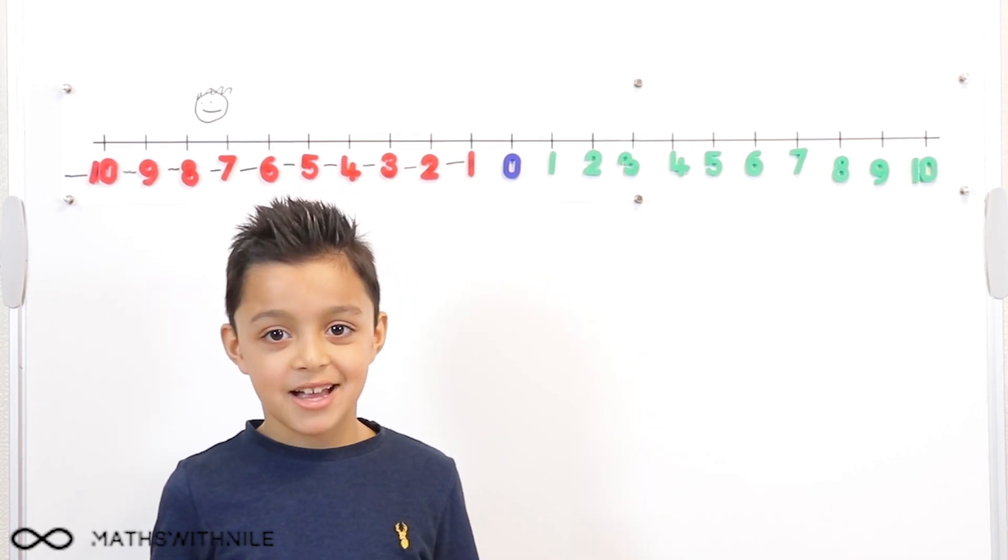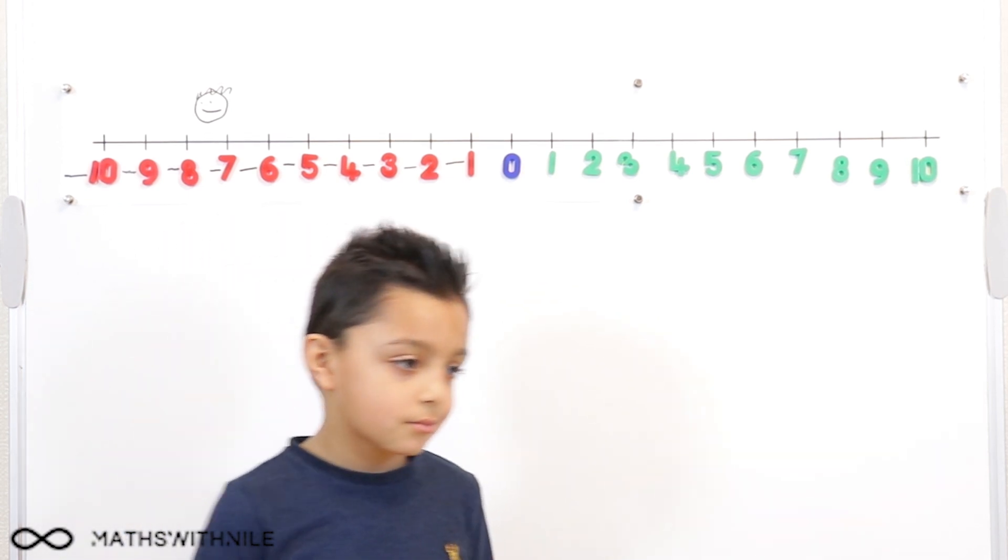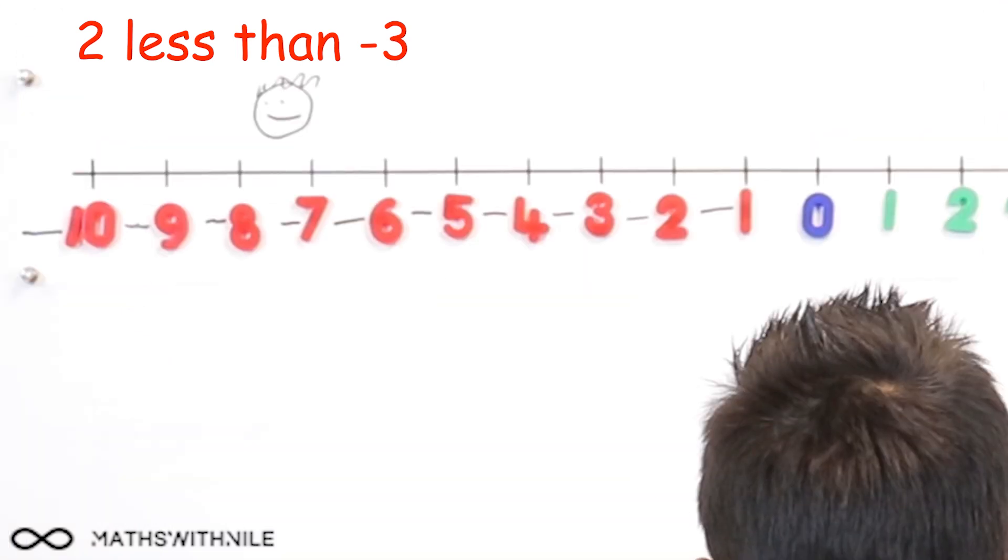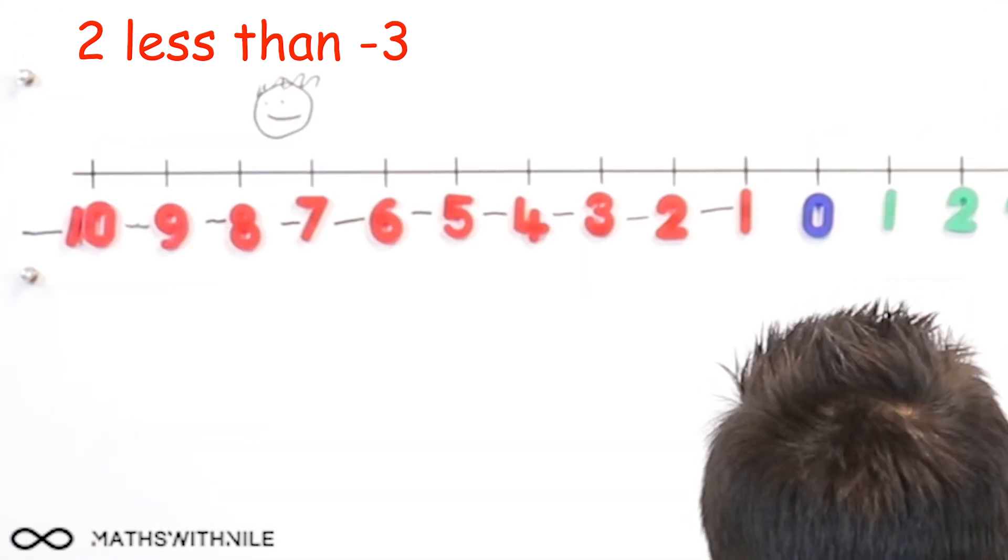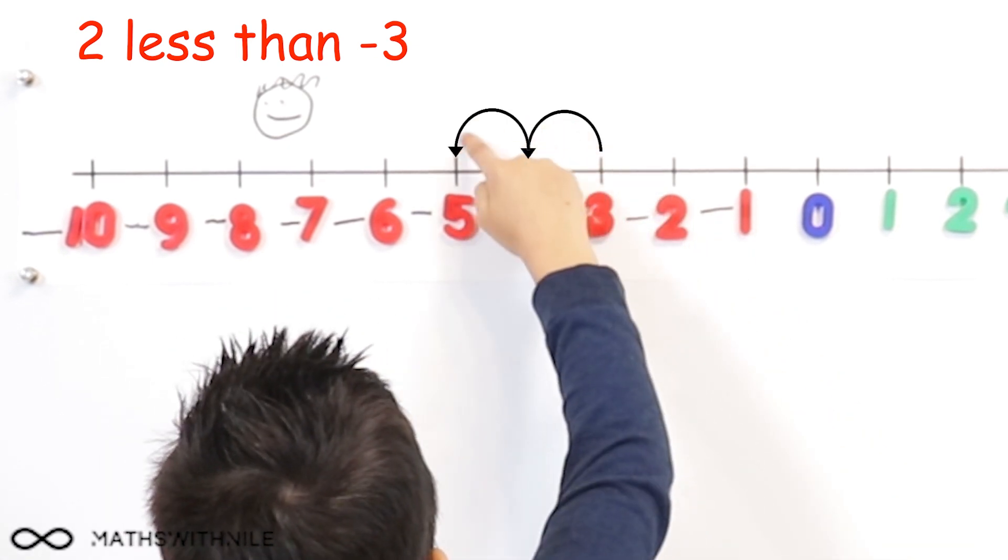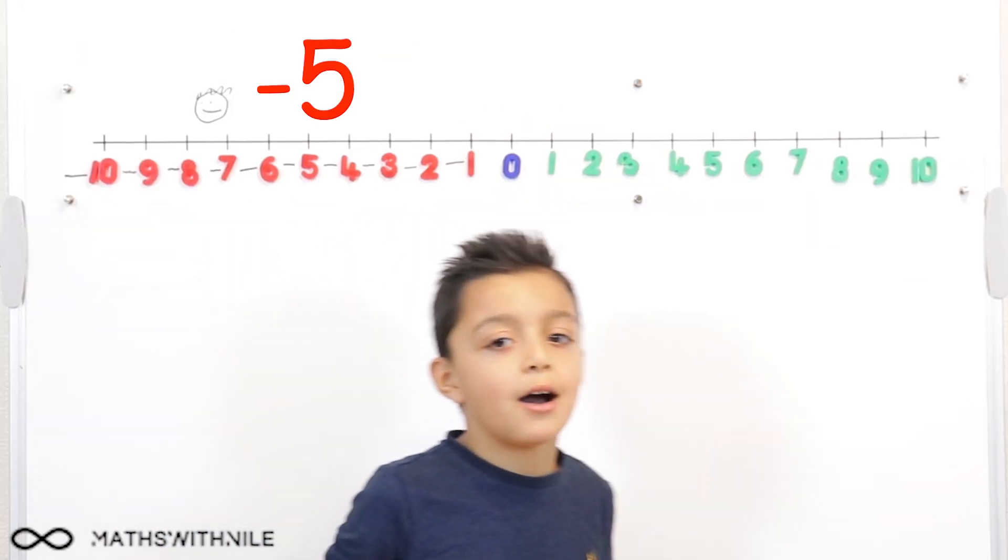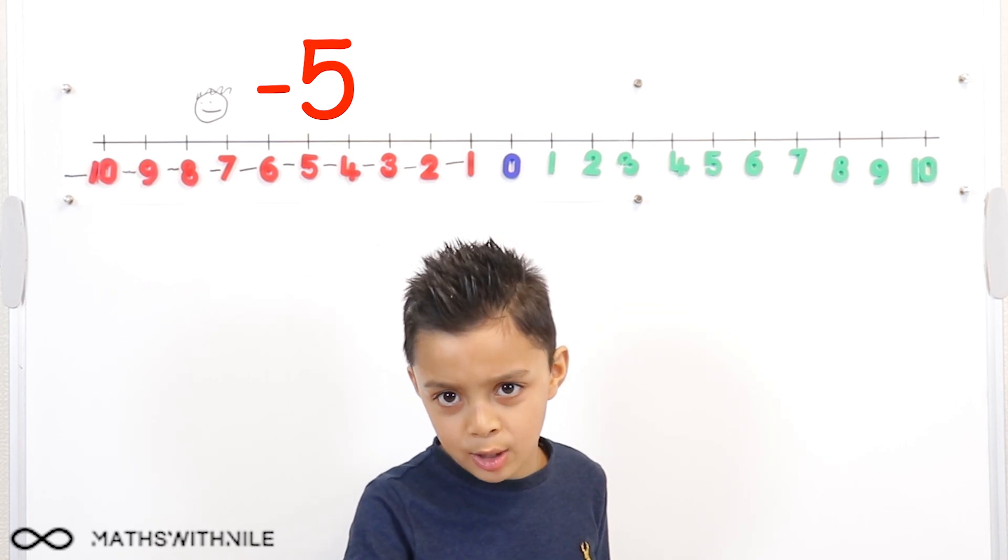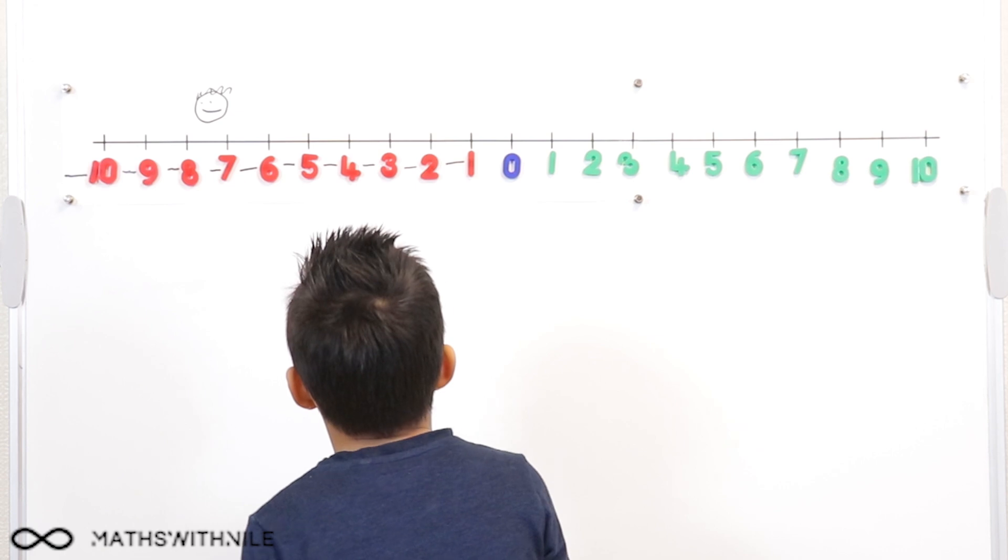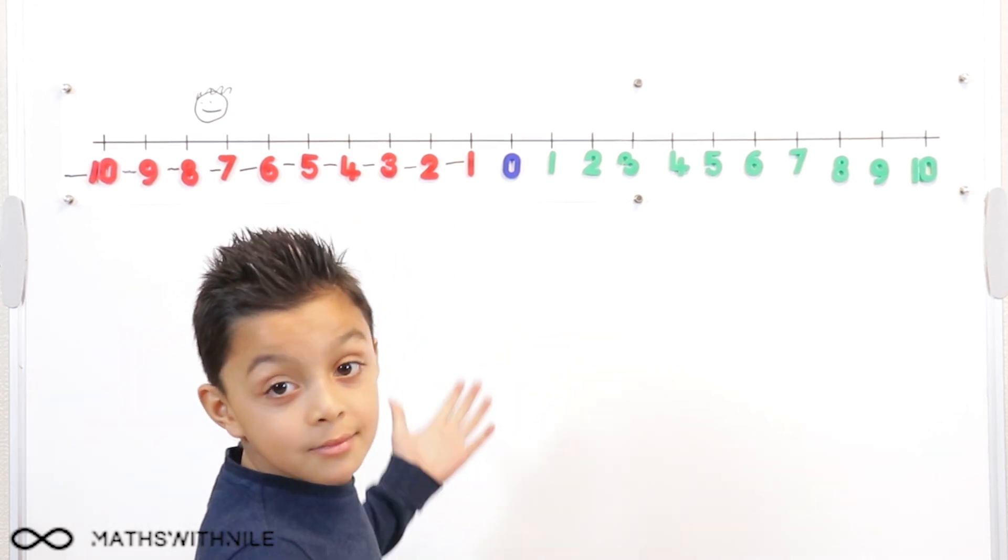Okay. What number is 2 less than minus 3? 2 less than minus 3. 1, 2, minus 5. Good. And that means we're also doing a quiz, right? We are. So, you need to go to the left if you want to get a number that is smaller. Yes.